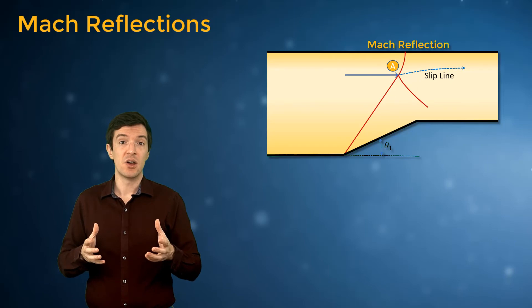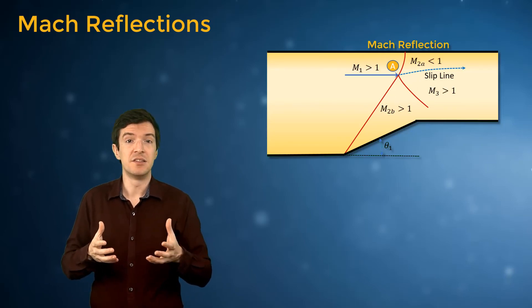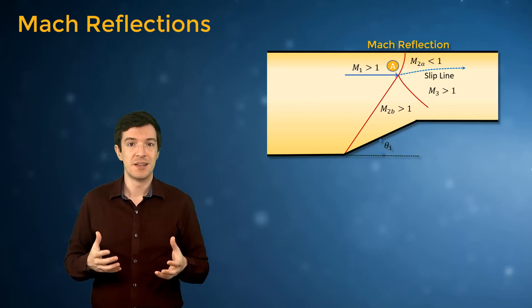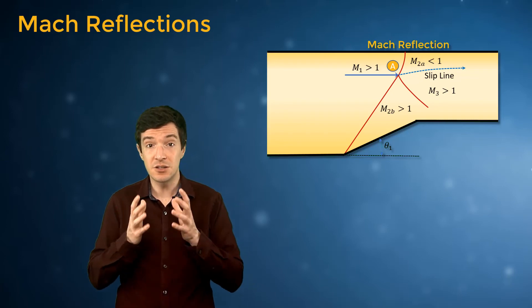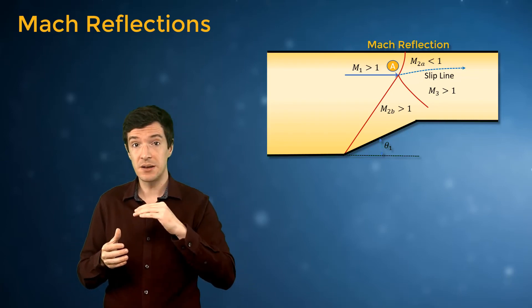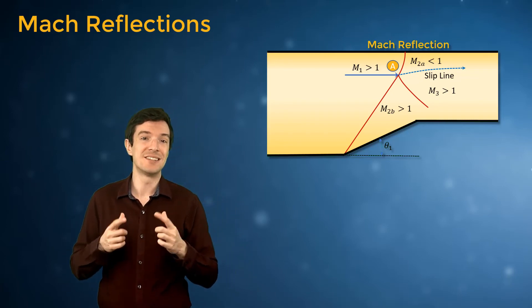On the top side of this slip line, the flow is subsonic, since it goes through a strong shock, while below it, the flow is still supersonic.